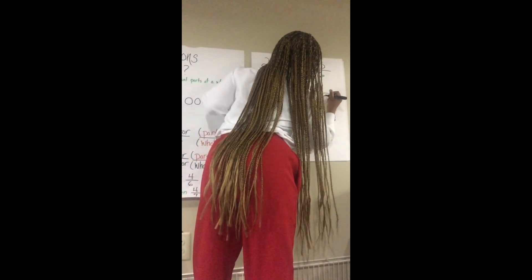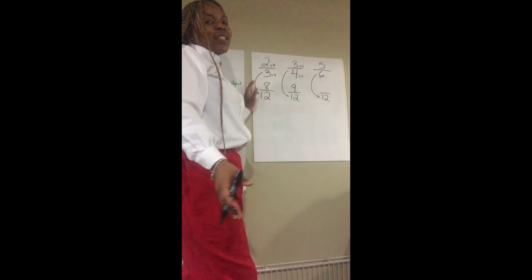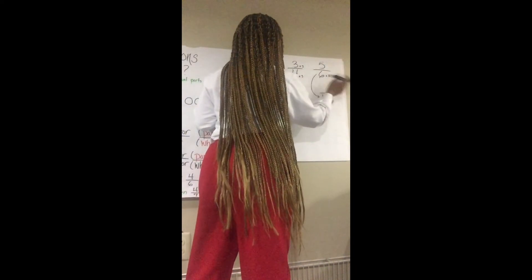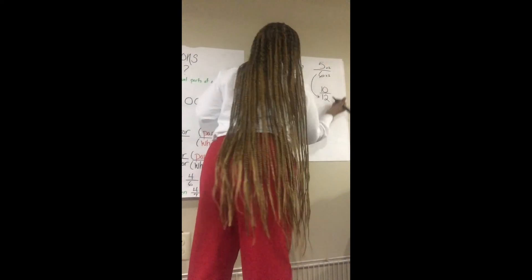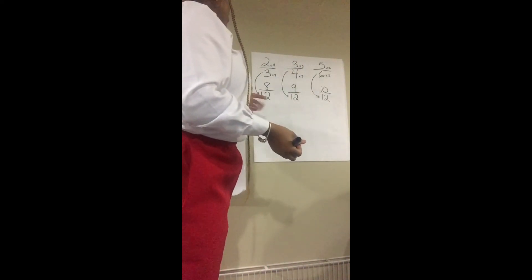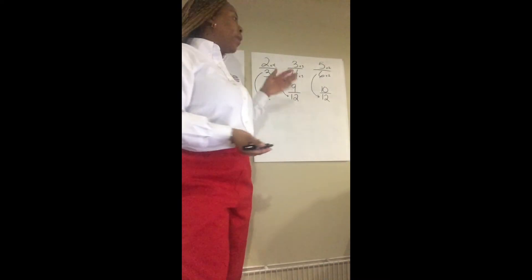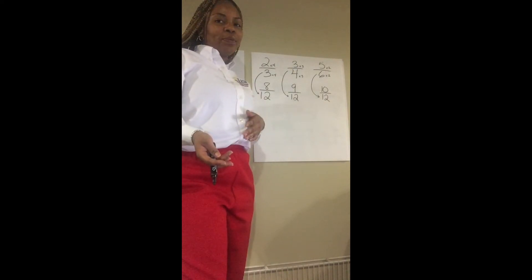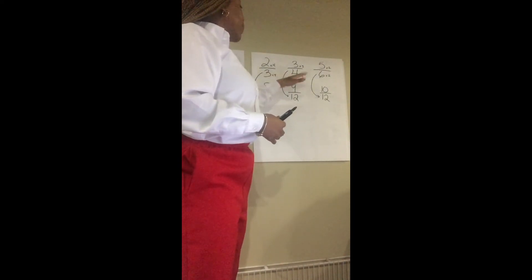Moving on to our last fraction, five sixths — we're going with a denominator of twelve. How do we go from six to twelve? We multiply. Six times two equals twelve, so we're going to take that same two and multiply by our numerator. Five times two gives us ten. Now we have our new equivalent fractions: eight twelfths, nine twelfths, and ten twelfths. I want you to make note that twelve was our lowest common denominator for all three denominators — three, four, and six.